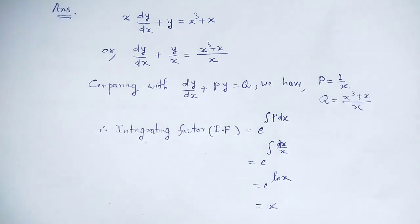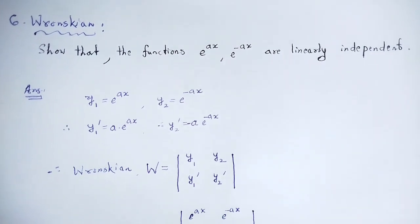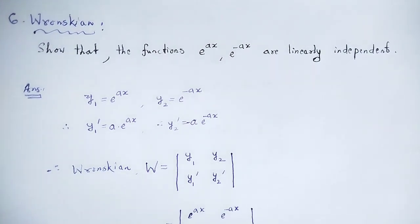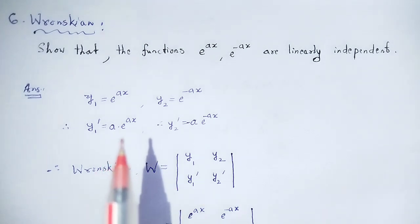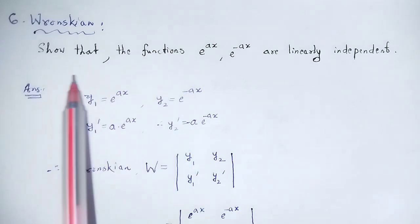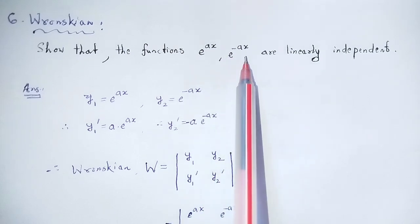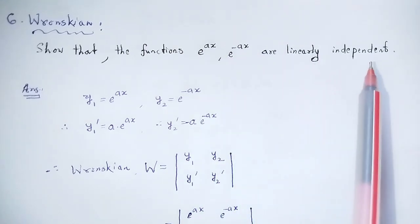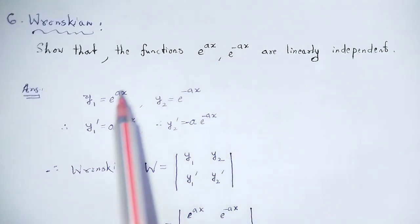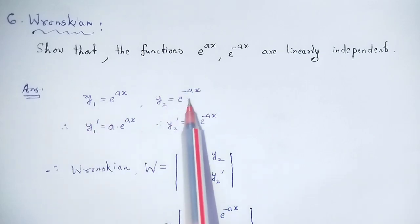Next: the Wronskian. The Wronskian is used to determine whether given functions are linearly dependent or linearly independent. As an example: show that e^x and e^(-x) are linearly independent. Let y1 = e^x and y2 = e^(-x).